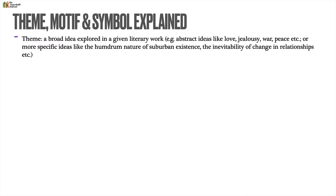Topic two: theme, motif and symbol. When it comes to fiction, there's probably no story without some sort of theme. A theme is a broad idea explored in any given literary work — these could be abstract ideas like love, jealousy, war, peace, or more specific ideas like the humdrum nature of suburban existence, or the inevitability of change in relationships.